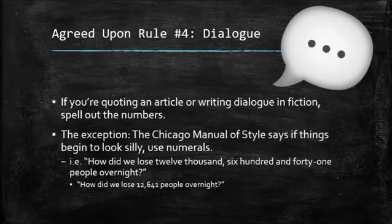The big exception to this rule is that in the Chicago Manual of Style, they have a vaguely worded rule that says if it begins to look silly, then go ahead and use numerals. For example, it would not make a ton of sense to write out how do we lose 12,641 people overnight. Write it out as a number. So this one is all about what makes the most sense. But generally most of these style manuals are going to say write it out if you're writing dialogue. So if it's got quotes around it, write out the numbers.